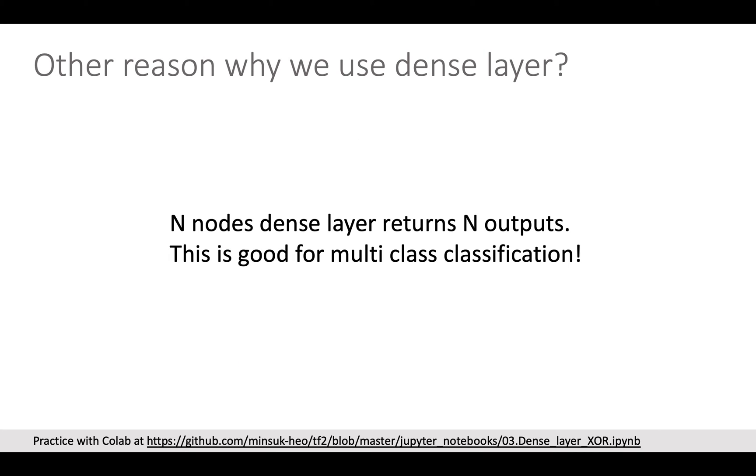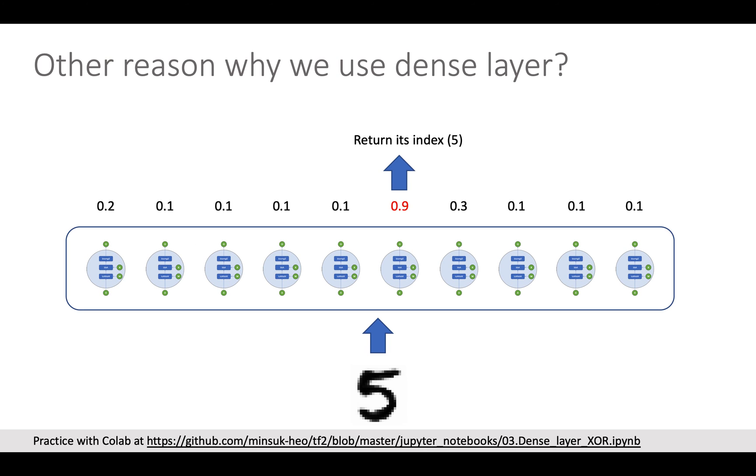Dense Layer is also very useful for the last layer of a classification model. Since N nodes Dense Layer outputs N outputs, this is an example of classifying MNIST's 10 digits. By having 10 nodes Dense Layer at the last layer, we can use the greatest output value index as a model's prediction.